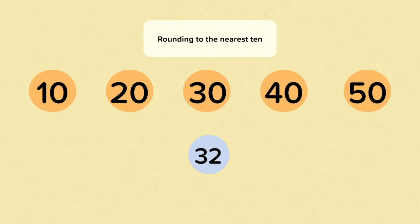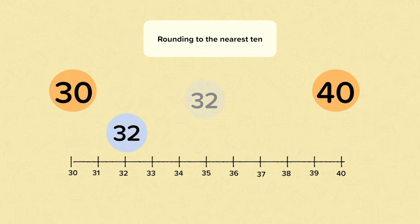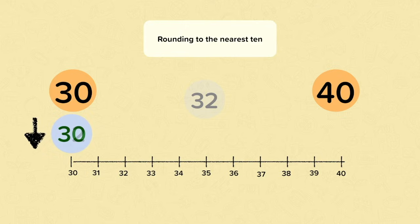Let's have a look at rounding the number 32 to the nearest ten. The first thing that we need to do is work out which two tens this number is between. 32 is between 30 and 40. So when we're rounding a number to the nearest ten, we need to decide which ten it's closest to. So is 32 closer to 30 or 40? We can use a number line to help us. As you can see here, it's closer to 30. So we would round 32 down to 30.